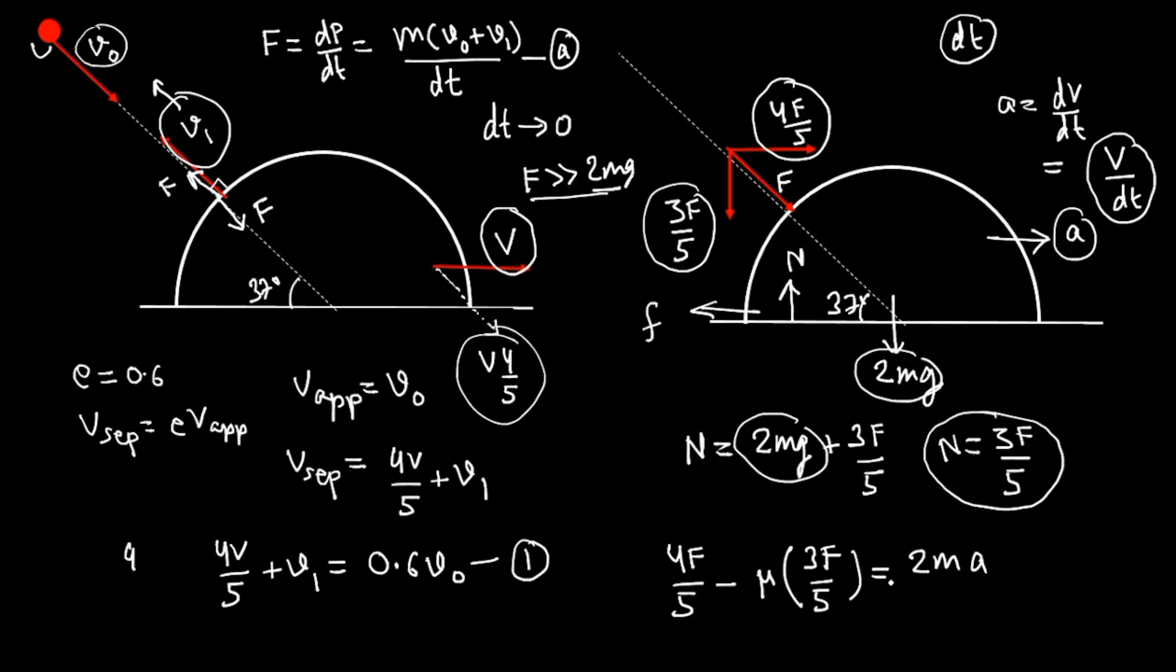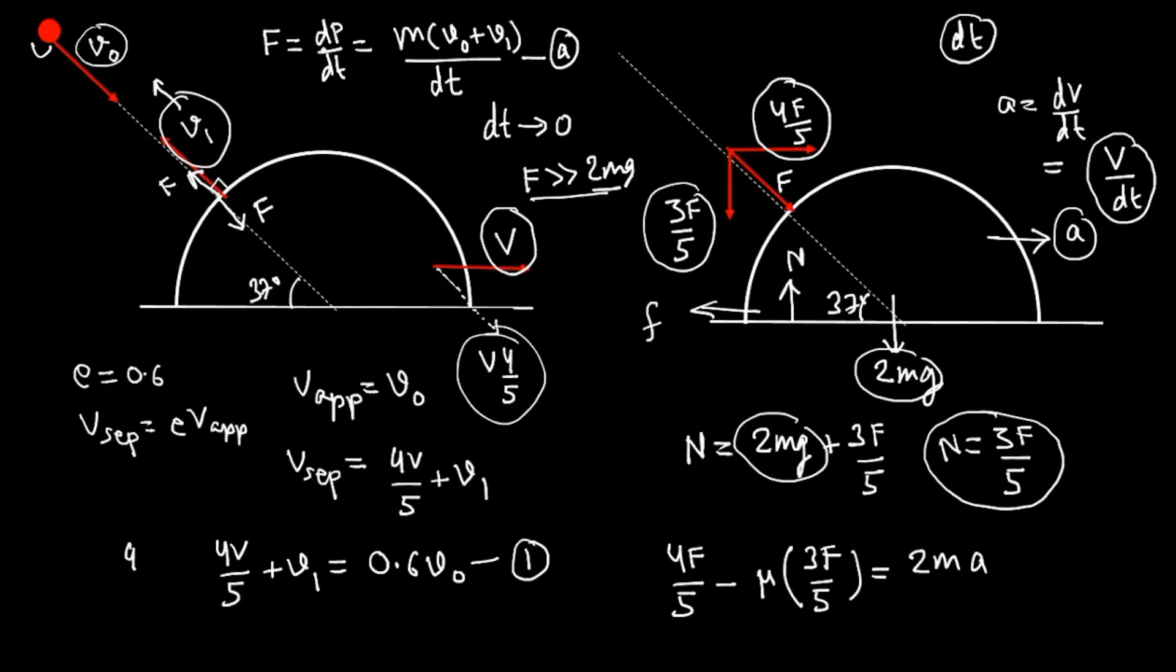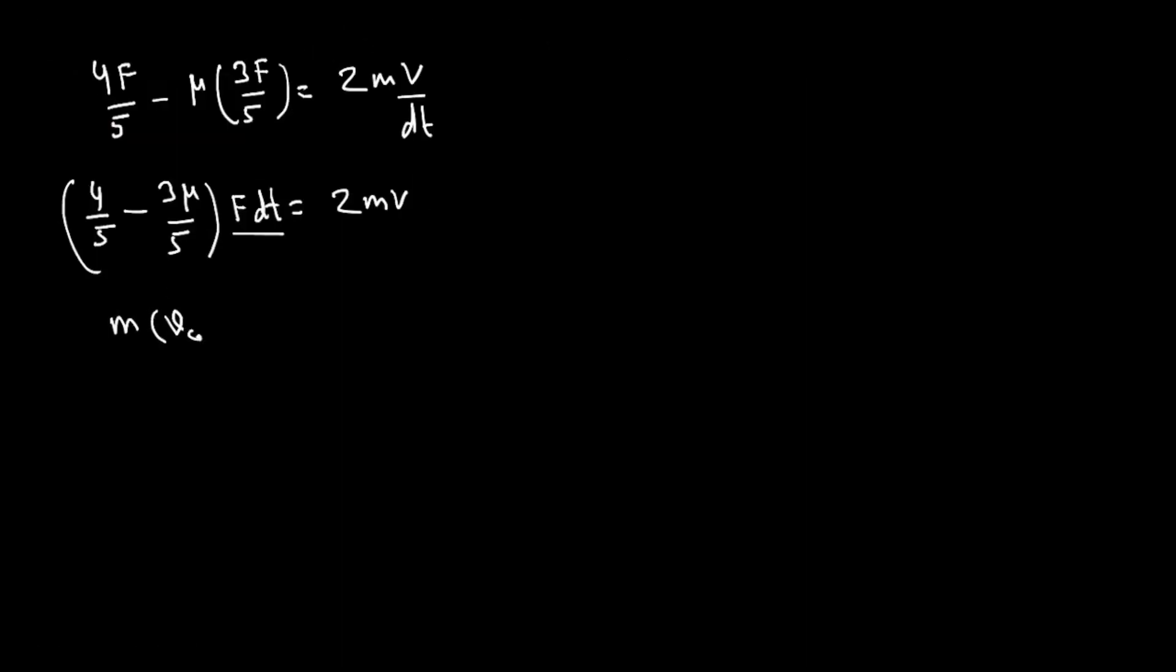If you put it in, what do you get? 4F/5 - μ(3F/5) = 2m(V/dt). If you bring dt over, you get (4/5 - 3μ/5) × F × dt = 2mV. F × dt value we already have: m(V₀ + V₁).